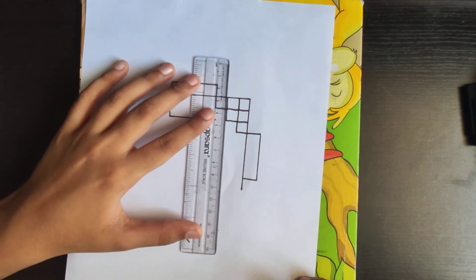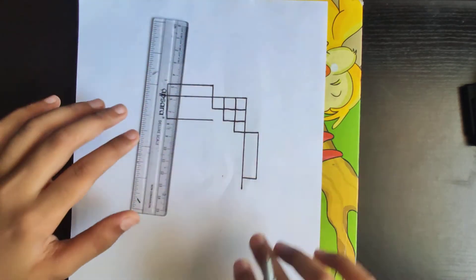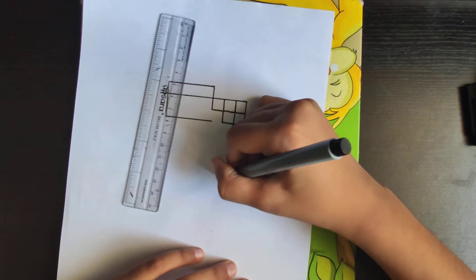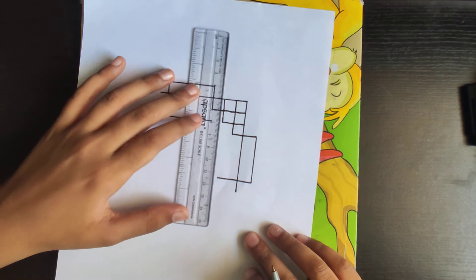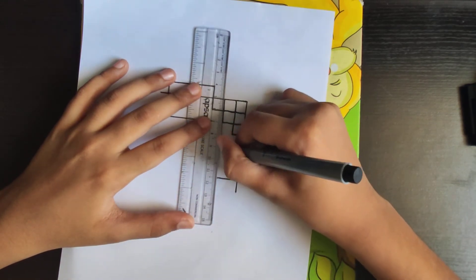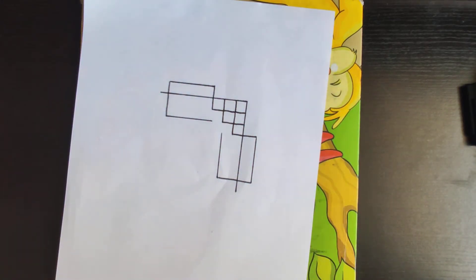Let's take the point now. Like this, make a line till here, till here. And then a straight line like this.